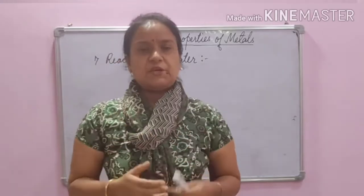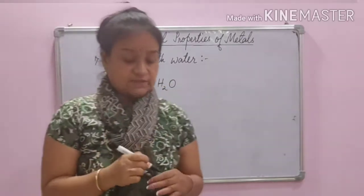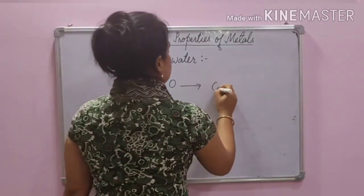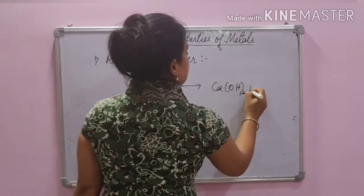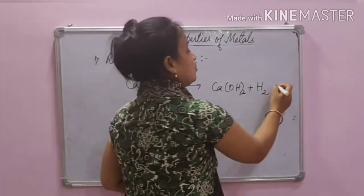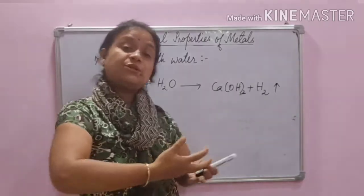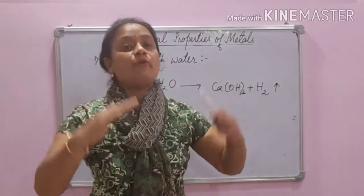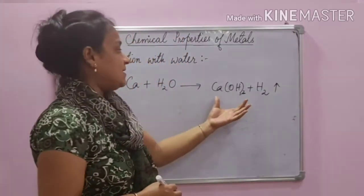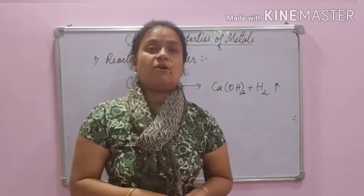Calcium also reacts with water, but this reaction is not as vigorous as that of sodium and potassium. It produces calcium hydroxide along with hydrogen gas. An interesting fact is that this hydrogen gas sticks to the surface of calcium, and since hydrogen is light, calcium starts floating on the surface of the water.